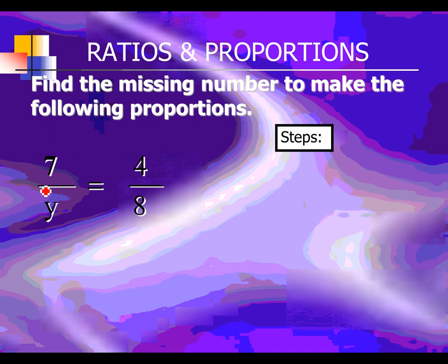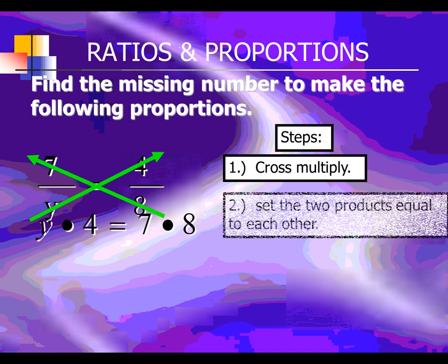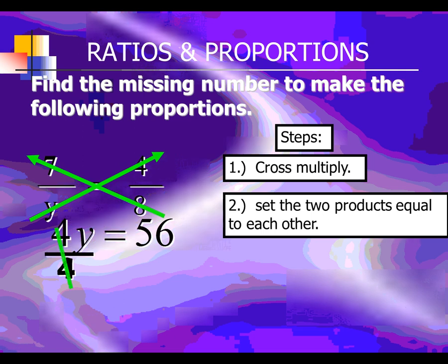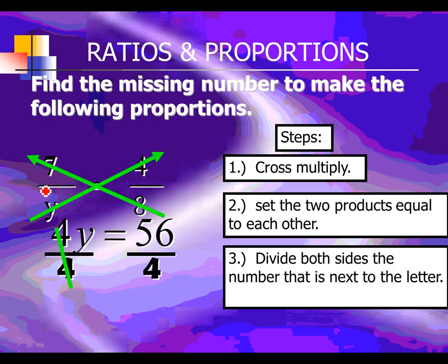One more example like these. 4 times Y, and you're going to do 7 times 8. 4 times Y is 4Y. 7 times 8 is 56. So we get 4Y equals 56. This is a very simple equation — just divide by 4. 56 divided by 4 is 14. So Y equals 14.